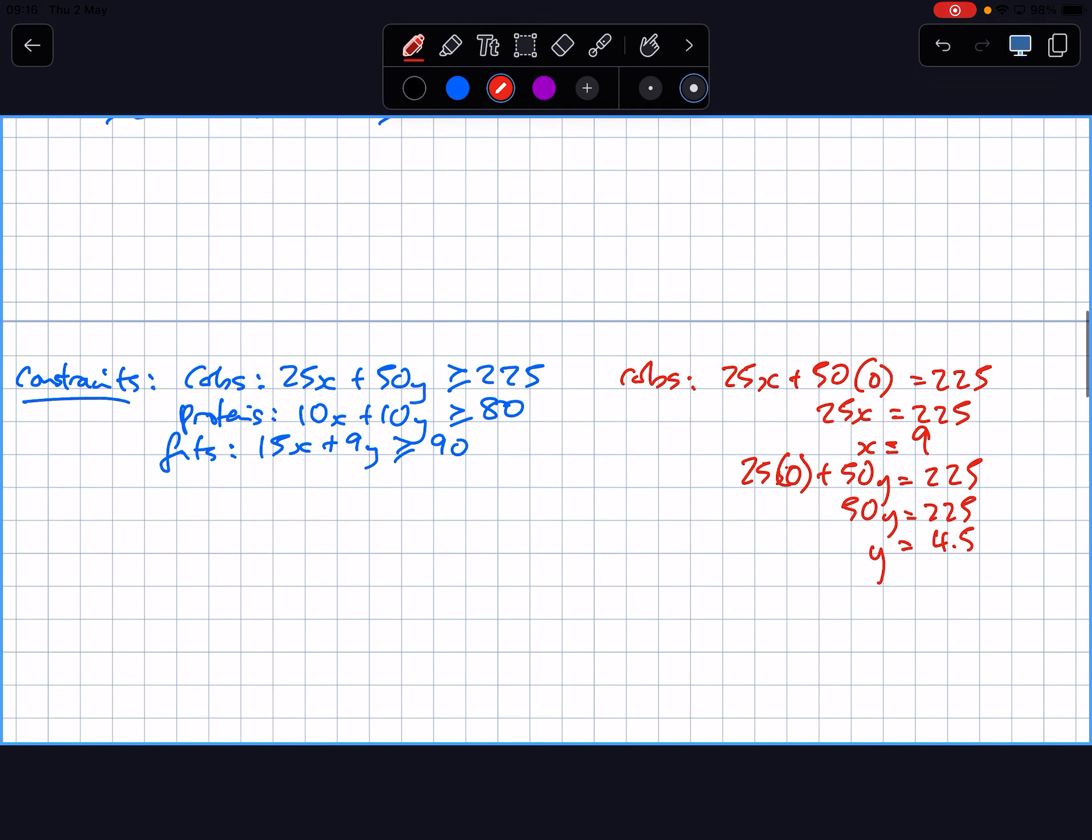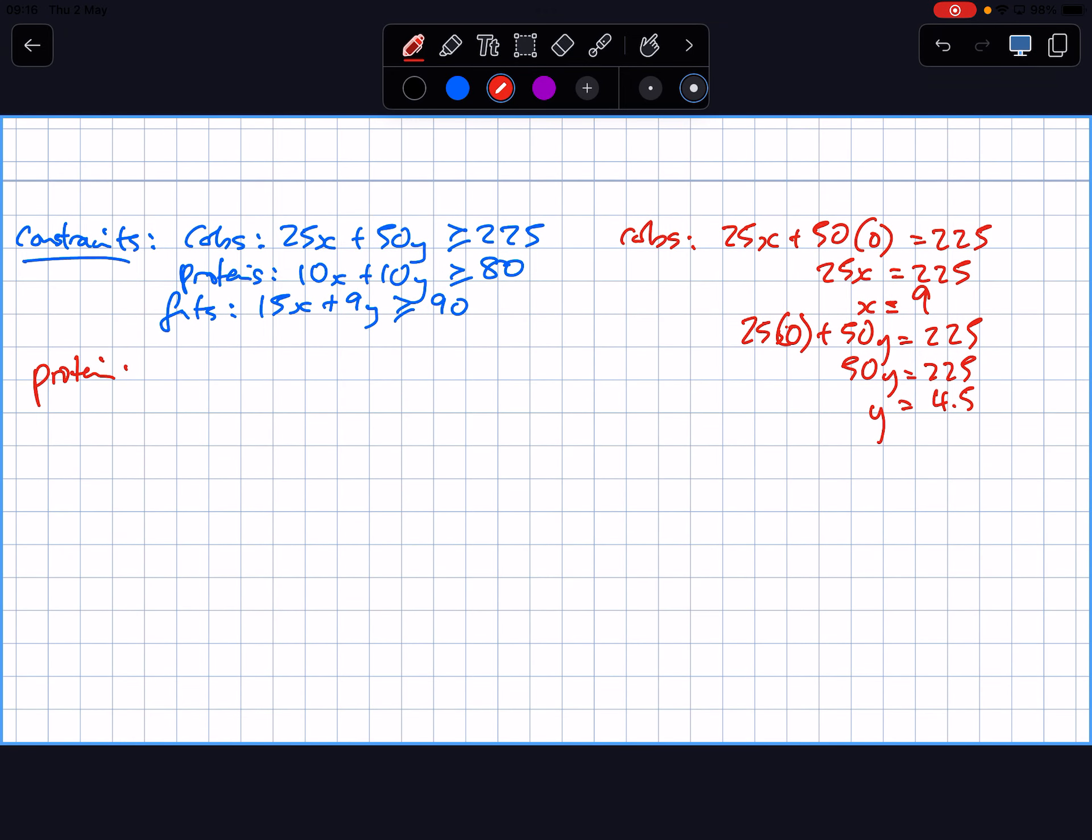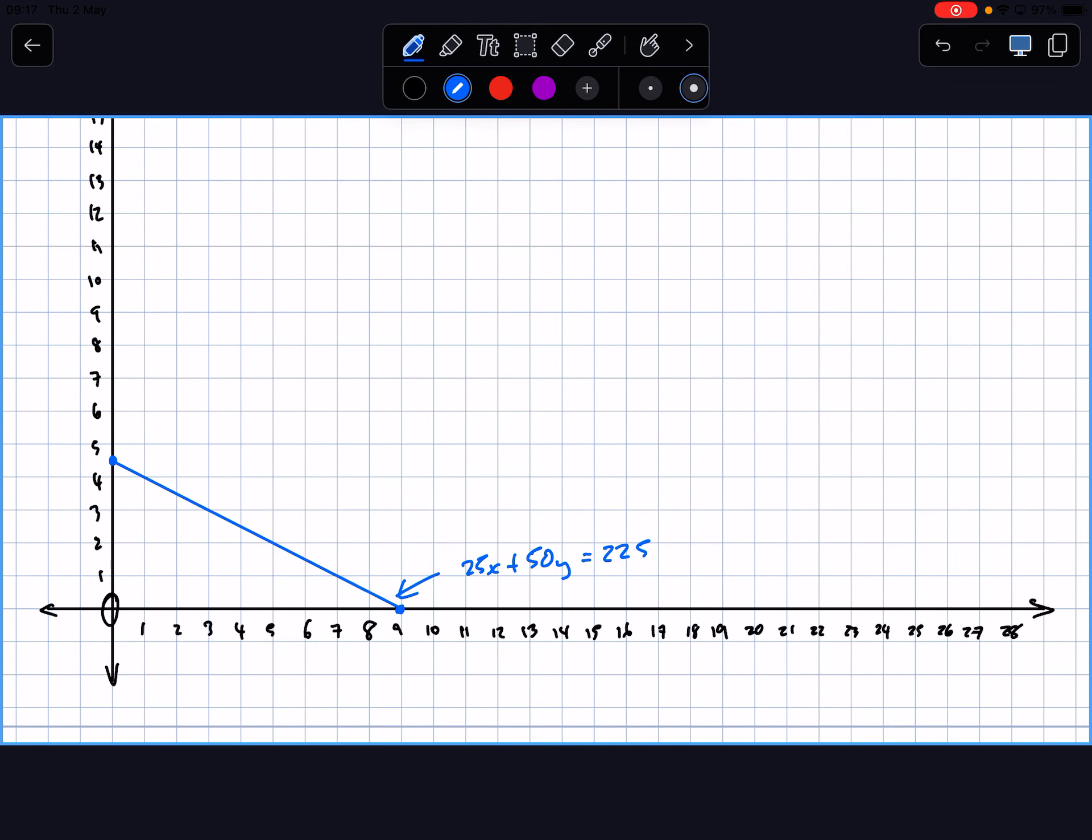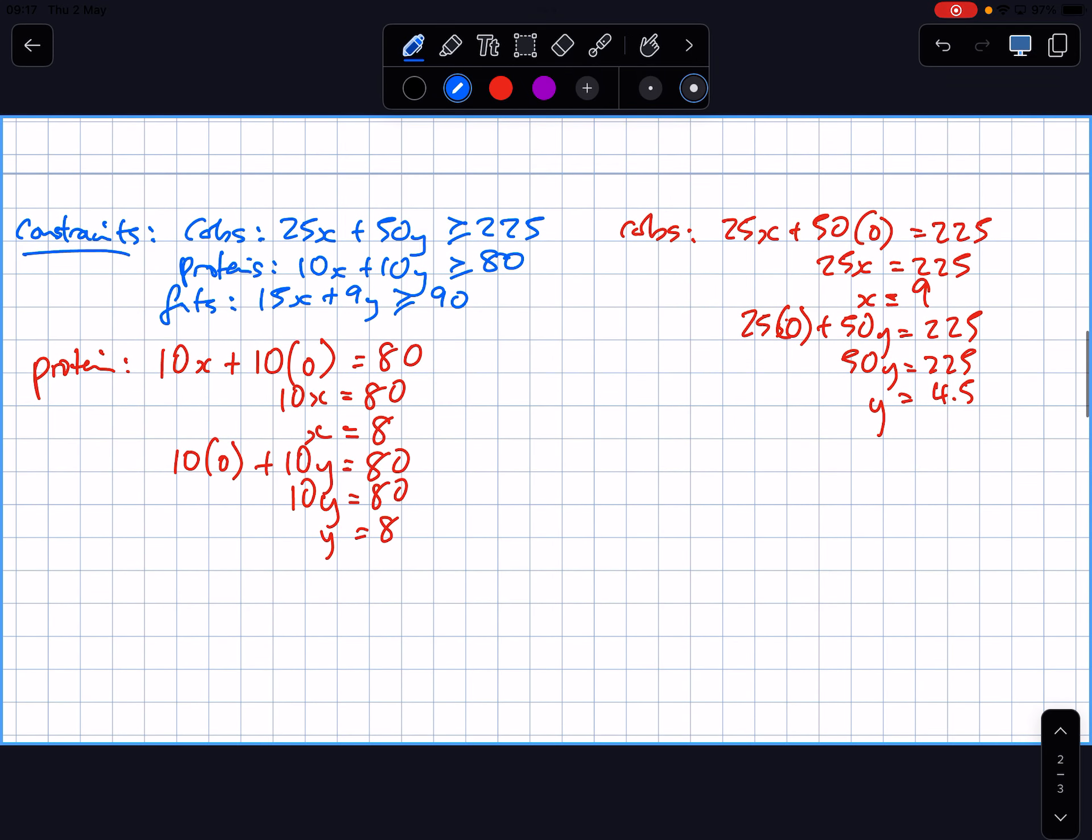I'm going to call out the maths for the protein constraint to draw it. 10X equals 80, X is going to be 8. 10Y equals 80, Y equals 8. So protein constraint is nice to draw. It's 8 and 8. Label this 10X plus 10Y equals 80. I've got one more line to draw which is the fats one.